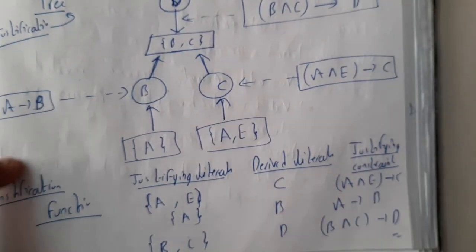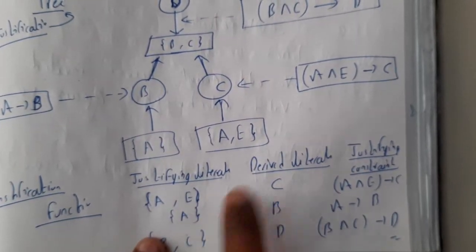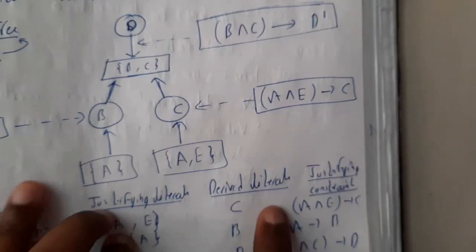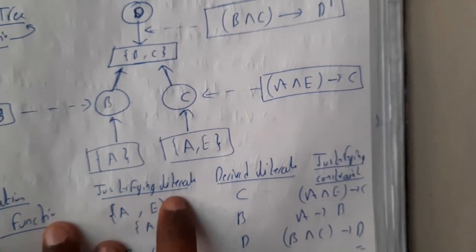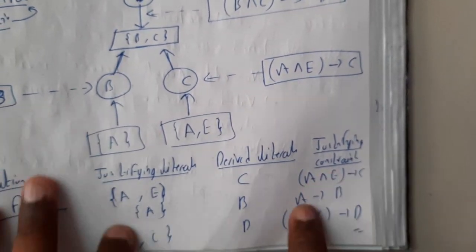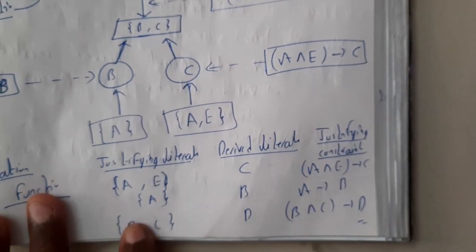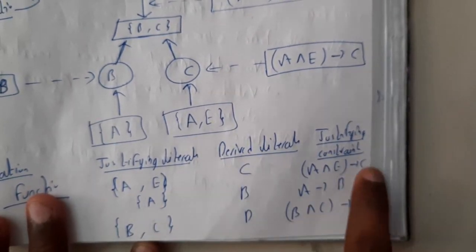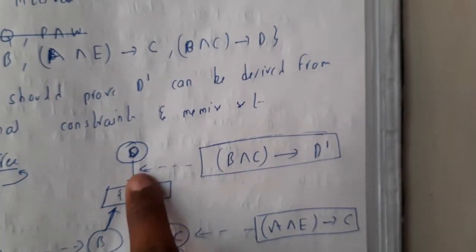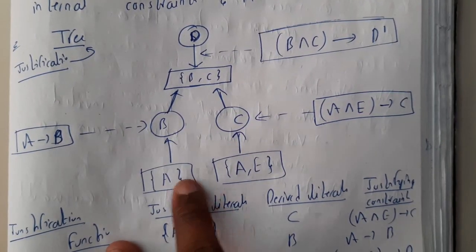If you want the explanation, the table is here. I wrote the table down. So justification literals, derived literals, and justification constants. Justification constants are nothing but the given equations. Justification literals are the left part here whatever we are having. So a, e, a and b, c will be justification literals.